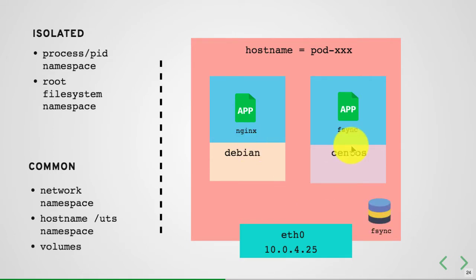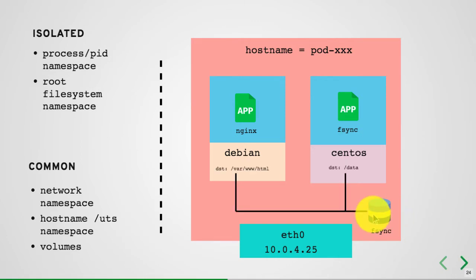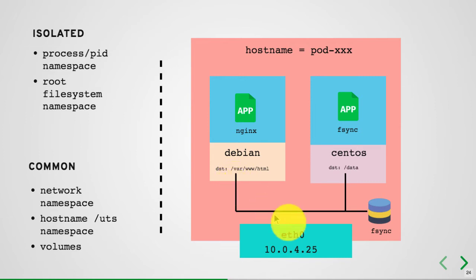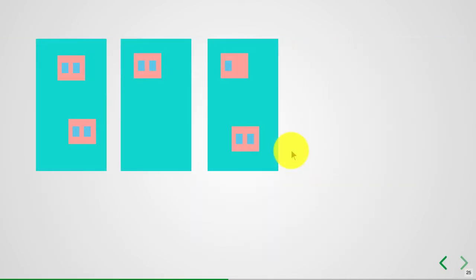Containers in a pod can also share disk space. When you mount a volume, you mount it on the pod and then make it available at different mount locations inside two different containers — the same volume shared even from different paths. This makes it easy to run two applications that depend on each other. They can communicate over localhost, share the same disk space, share the same hostname, and when you deploy them they are deployed on the same node.